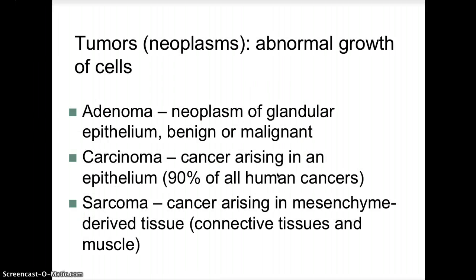Tumors, or neoplasms, are abnormal growths of cells. An adenoma is a neoplasm of glandular epithelium that can be benign or malignant. A carcinoma is cancer arising in epithelium and accounts for 90% of all human cancers. A sarcoma is cancer arising in mesenchyme-derived tissue — connective tissue and muscle tissue.